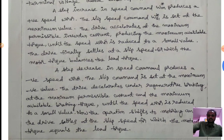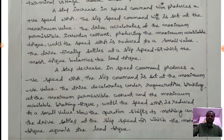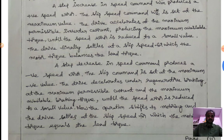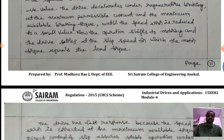A step decrease in the speed command produces a negative speed error. The slip command is set to the maximum negative value, and the drive decelerates under regenerative braking at maximum permissible current and maximum braking torque, until the speed error is reduced to a small value. Operation then shifts to motoring, and the drive settles at the slip speed where motor torque equals load torque.